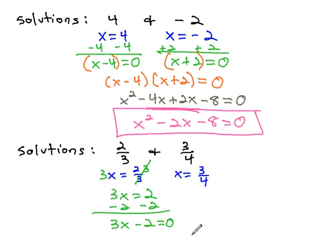We can do much the same thing in the other equation. Clear the fraction by multiplying by the LCD of 4, giving us 4x equals 3, and then subtracting 3 from both sides so it equals 0, giving us 4x minus 3 equals 0.